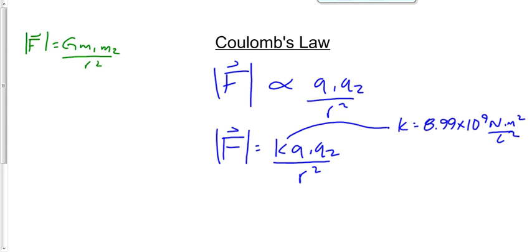Look at the structure of the equation. They look almost the same. One uses charge, one uses mass. The constant, I don't know if you remember this in Physics 20, 6.67 times 10 to the minus 11.